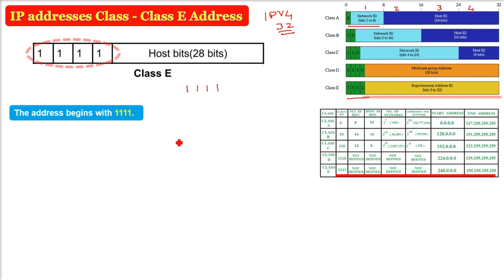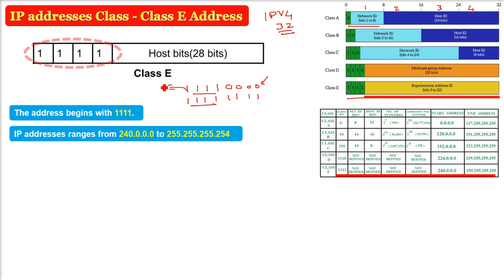The address always begins with 1111, this is fixed. When you fix this 1111, what is the minimum? 11110000. Then 1111 is fixed, so maximum can be 11111111. You cannot change the first four bits. What is the decimal value of this binary value? If you convert this, the first one will be 240 and the last one can be 255.